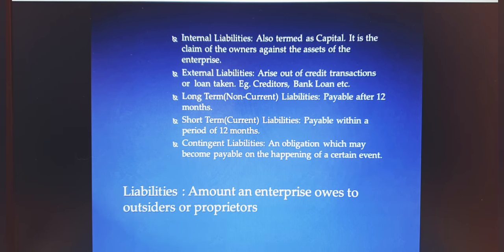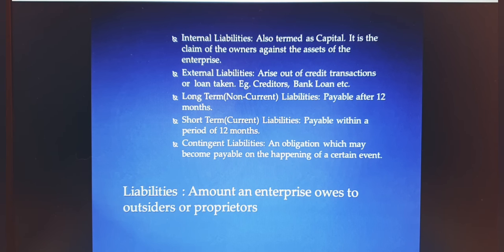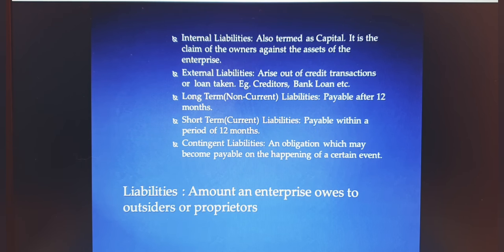As a guarantor, you don't necessarily have to pay the bank — only if your friend doesn't pay will you be required to pay. So it is uncertain whether you will have to pay or not. These liabilities which may or may not arise depending on a future event are called contingent liabilities.